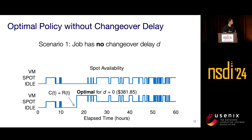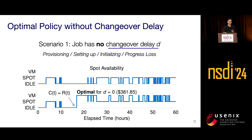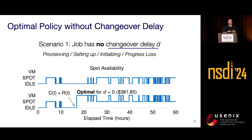We first look at a simple case where no changeover delay is involved. Changeover delay represents the provisioning, setting up, and initializing of a new instance, as well as any progress loss during preemption. Without changeover delay, we can derive an optimal policy: use only spot instances until the remaining computation time CT equals the remaining time to deadline RT. After that, use every minute before the deadline — switching between spot when available and on-demand when spot is not. This policy is provably optimal since it fully utilizes low-cost spot instances before the deadline.